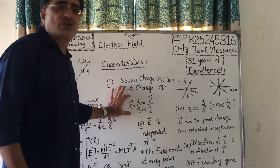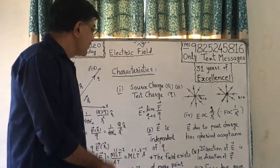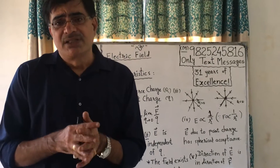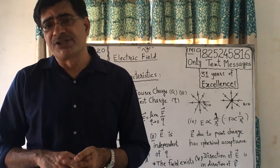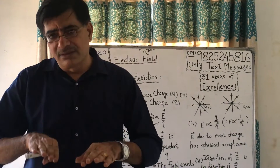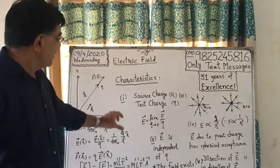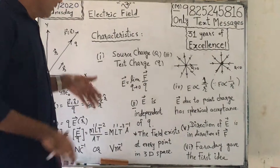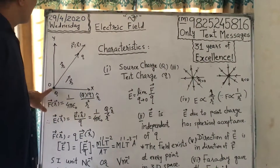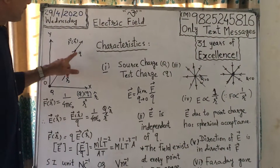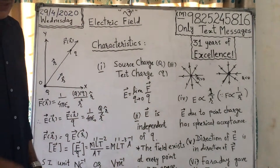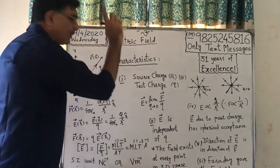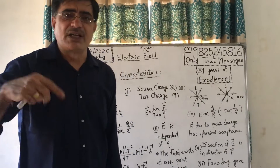So the ideal definition of electric field intensity is: limit q tends to 0 of vector F upon q — q must be as small as possible. This is ideal because according to quantization of electric charge, the minimum available charge in free condition is small e, and no less than that is available. That is why this is an ideal definition — good but ideal. The electric field produced by capital Q is independent of small q, because in the equation E = F/q, small q does not appear; so E is independent of test charge small q.